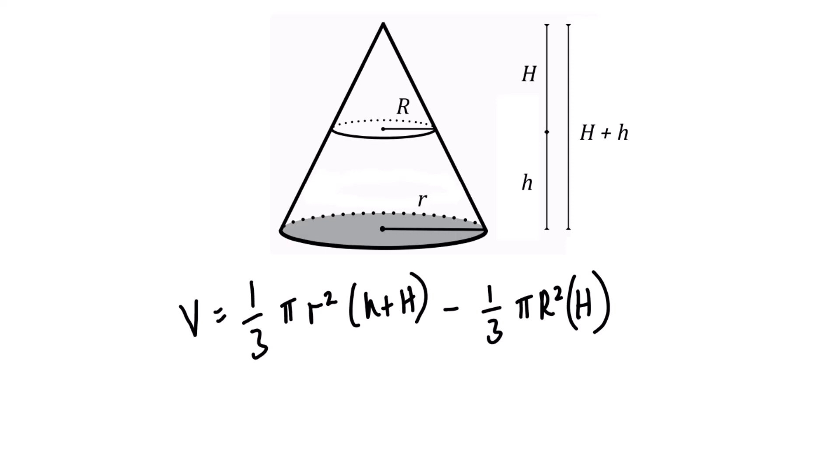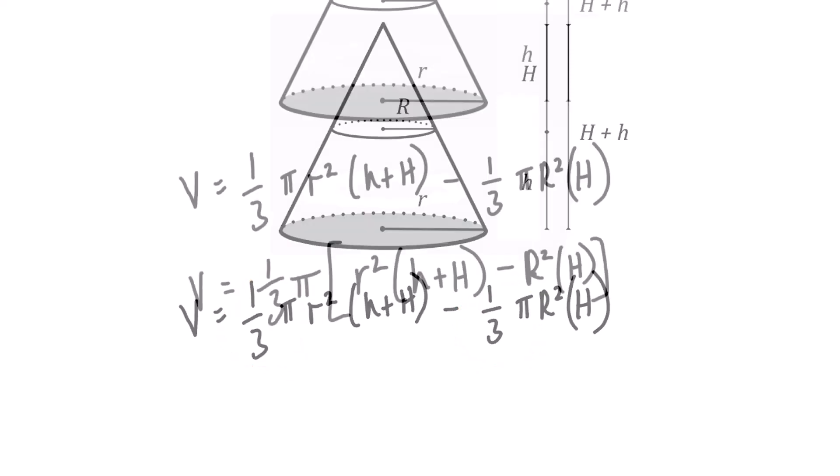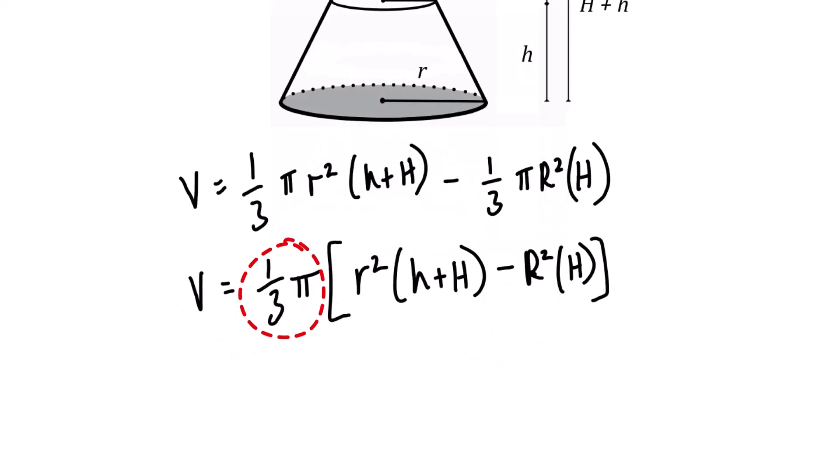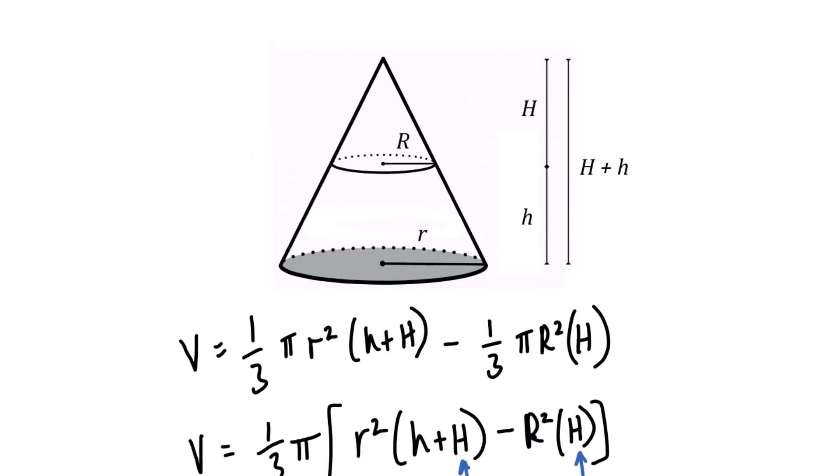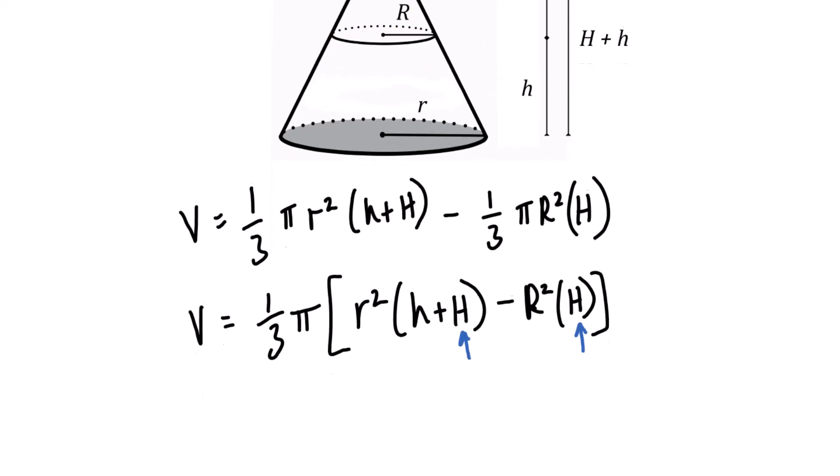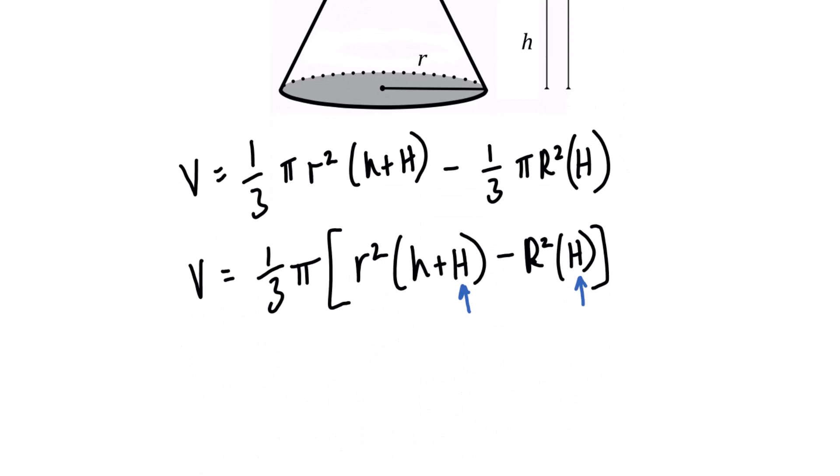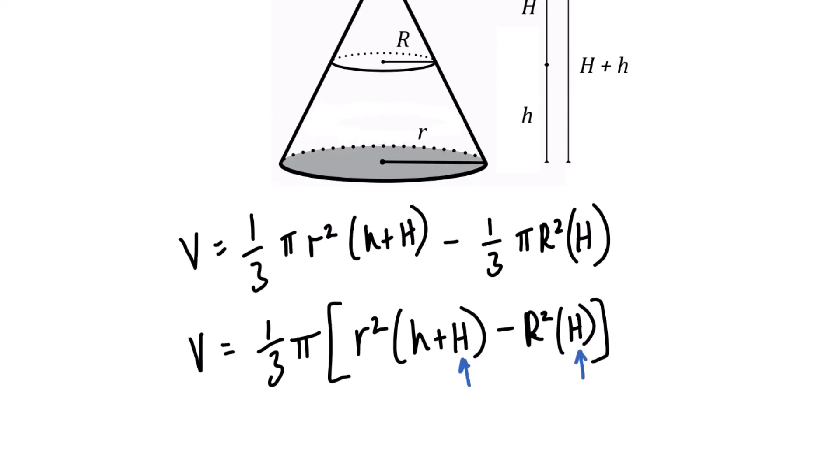As you can see in both terms of this equation, there is one-third and pi in common. If we factor out one-third and pi, here's what our equation evolves to. The problem with the equation so far is that we have this variable H, which tells us information about the truncated cone and nothing about the frustum. So somehow, I want to rewrite this equation so that this capital H is replaced with something that relates to the frustum itself.